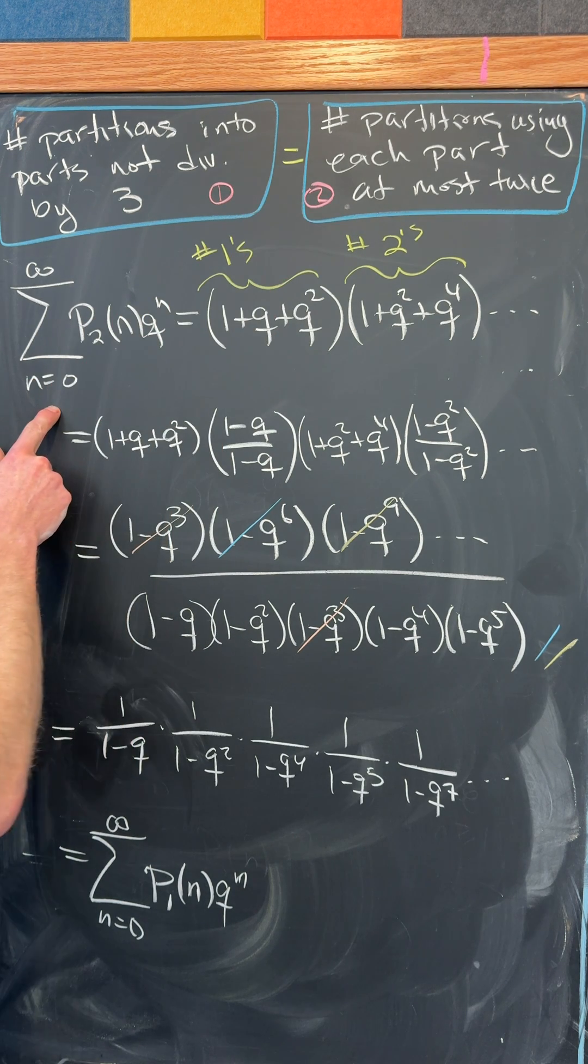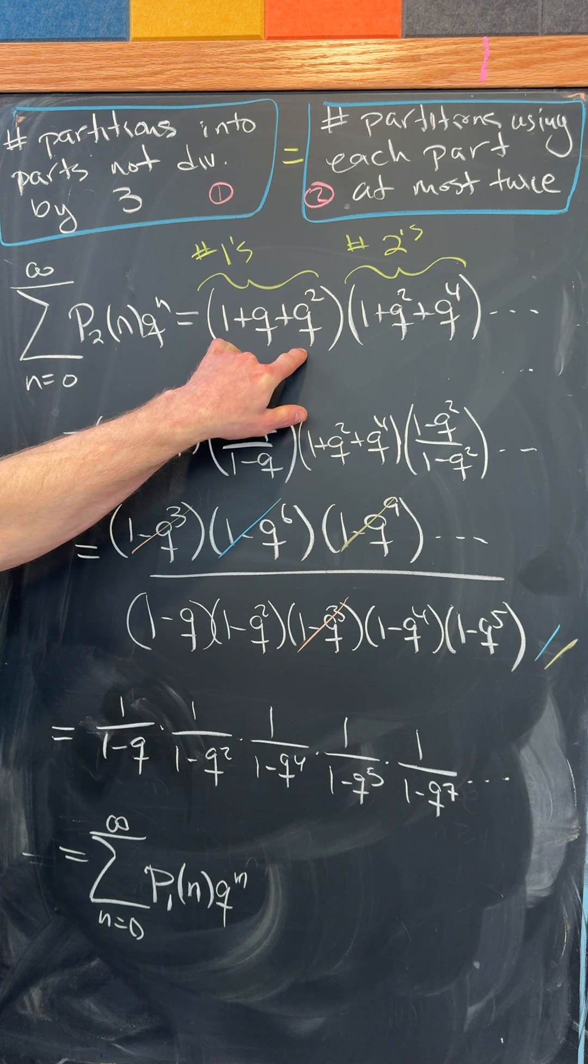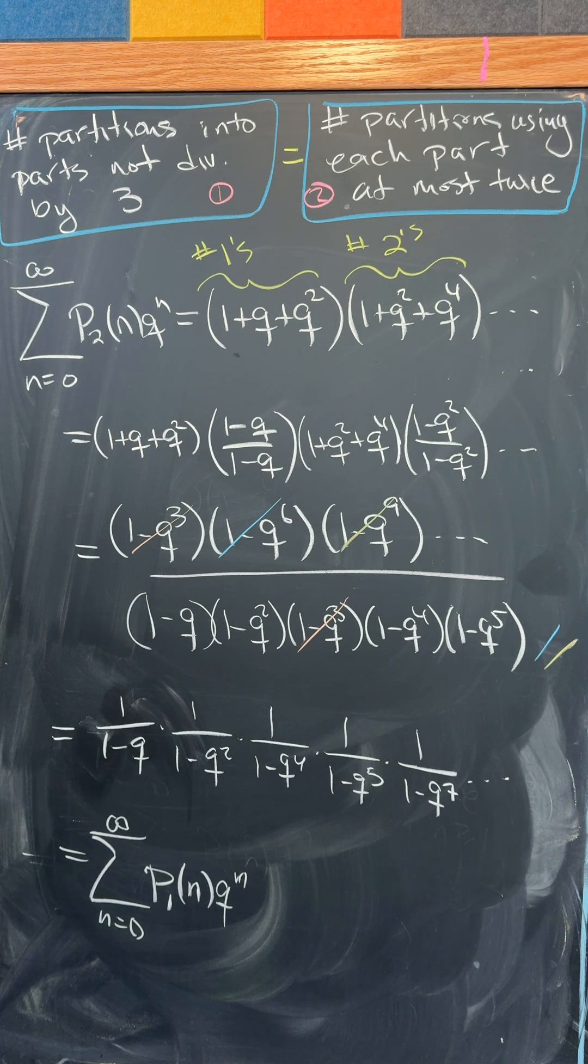The generating function for this right-hand side is equal to this product: (1 plus q plus q squared) times (1 plus q squared plus q to the 4th) and so on and so forth. So this controls the number of 1's used, this controls the number of 2's used, and then that continues.